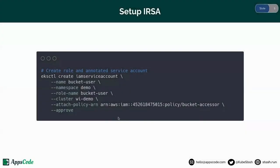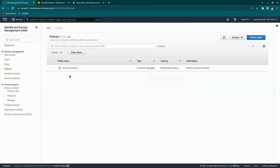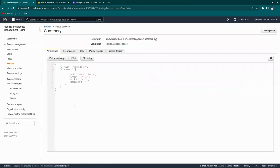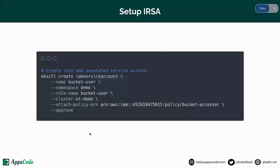Let's create these resources using this command. This command basically creates a bucket-user service account in the demo namespace. It also creates a bucket-user role in AWS with the bucket-accessor policy attached to it, and it annotates the service account with that bucket-user role. I have already created the bucket-accessor policy in AWS — let me show you that. Here is my bucket-accessor policy, and you can see it has permission to access the S3 buckets.